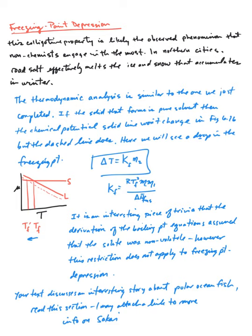As I wrote here, the colligative property that is most observed by people who aren't chemists is freezing point depression. That's because in northern cities, road salt effectively melts the ice and snow that accumulates in the winter.